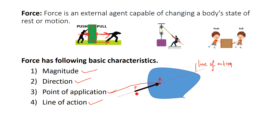The angle made by this force with respect to the positive x-axis is called the direction of the force. So F is the magnitude, theta represents the direction, A is the point of application, and the dotted line represents the line of action. These are the four important characteristics of any force.